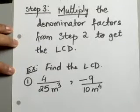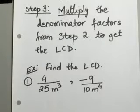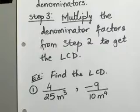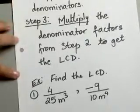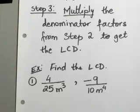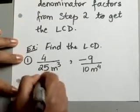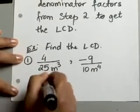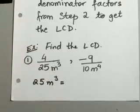We'll start with 4 over 25m³ and -9 over 10m⁴. We're not trying to add or subtract expressions here — all we're trying to do is find the least common denominator. So the first thing we will do is factor both our denominators and see what we come up with.